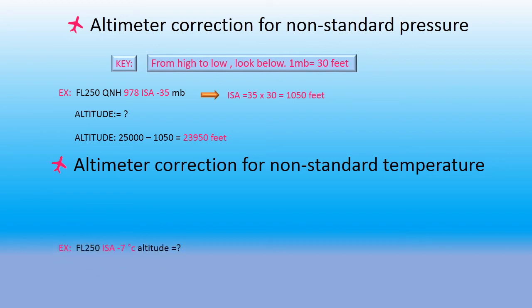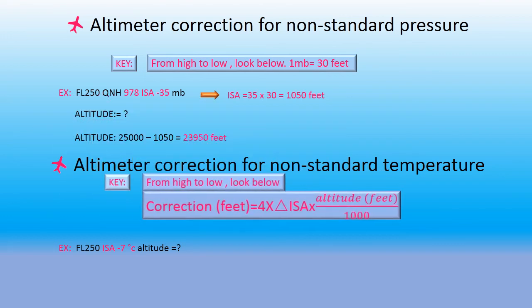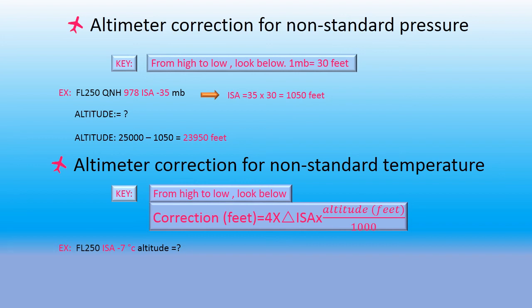For altimeter correction for non-standard temperature, on flight level 250 with ISA deviation minus 7 degrees Celsius. The key: high to low, look below. Correction in feet equals 4 multiplied by ISA deviation multiplied by altitude divided by 1000. Compared to the example: correction equals 4 multiplied by 7 multiplied by 25 — since 25,000 divided by 1000 equals 25 — giving 700 feet. So the altitude should be 25,000 minus 700 feet equals 24,300 feet.